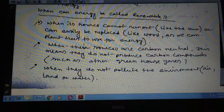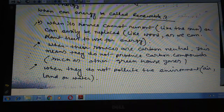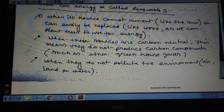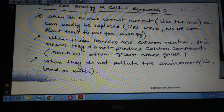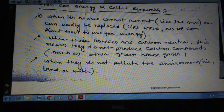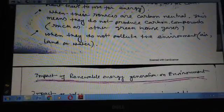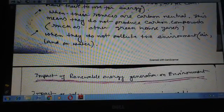The wind and energy is called renewable when its source cannot be run out like sun, etc. It can be easy to be replaced. Next, when their sources are carbon neutral, that means do not produce carbon and carbon related different types of gases, and when they do not pollute the environment, then we can consider this type of energy sources as renewable energy source.